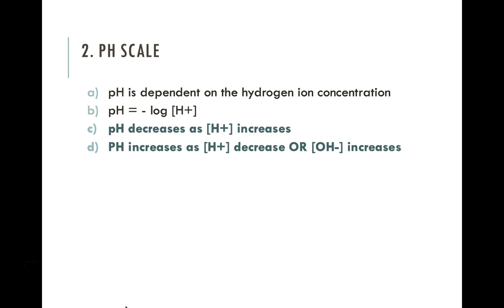We measure the acidity level of a solution by the pH scale. The pH scale depends on hydrogen ion concentration — it's a measure of how many hydrogen ions there are in a solution. The formula is the negative log of the hydrogen ion concentration. An important property of the pH scale is that it's not linear — it's actually an exponential change in concentration. As your pH decreases toward one, your hydrogen ion concentration increases. As your pH increases toward 14, your hydrogen ion decreases and your hydroxide ion concentration increases.